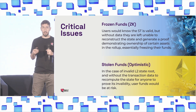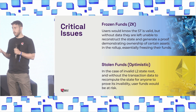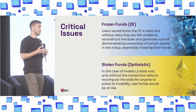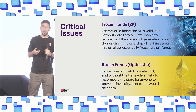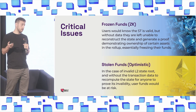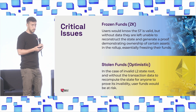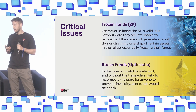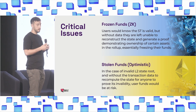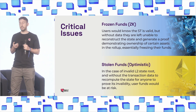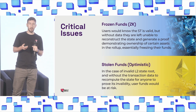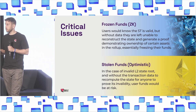The critical issues are different with the different types. For ZK rollups, users may be left unable to prove ownership of assets on the L2, which would essentially freeze their funds. For optimistic constructions, this can be even worse: an invalid L2 state root could be proposed, and without the transaction data necessary to recompute the state, users may be unable to prove its invalidity, meaning user funds could be at risk of being stolen.